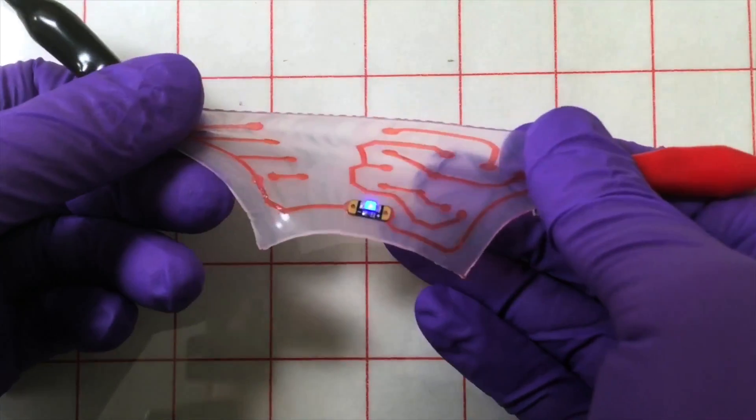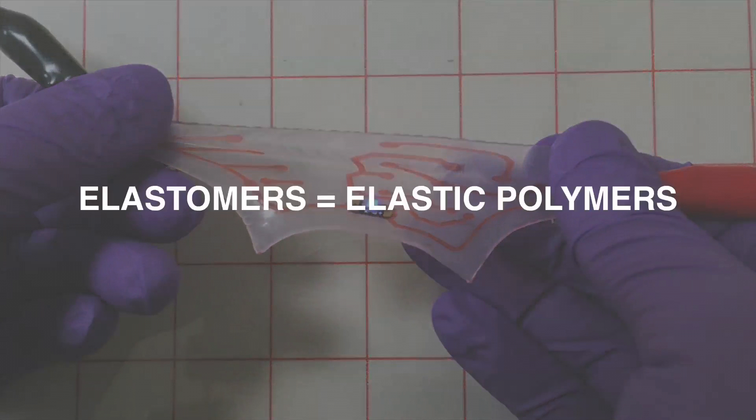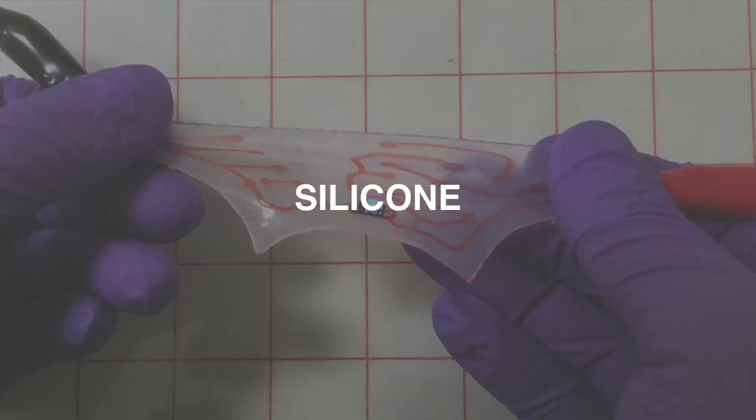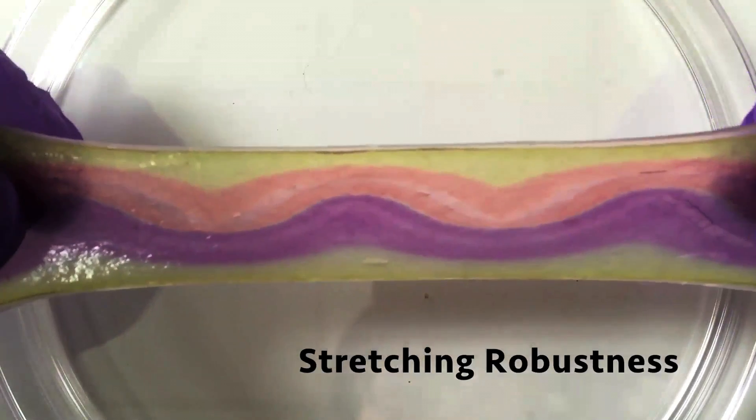Their method involves binding the hydrogels to elastomers, otherwise known as elastic polymers such as rubber and silicone. These elastomers are stretchy like hydrogels, yet impervious to water.